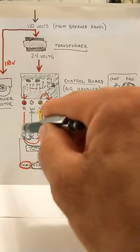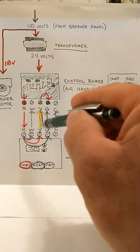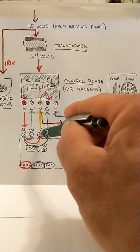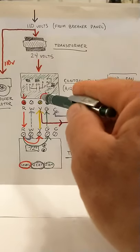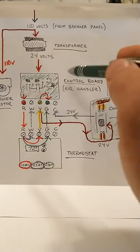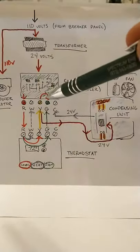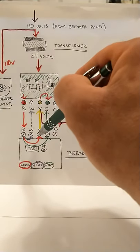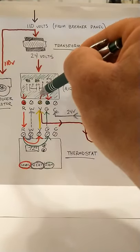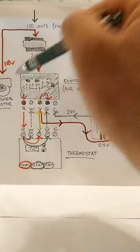When that circuit's closed in cooling mode, your 24 volts will travel from your Y in your thermostat to the Y terminal at your air handler. And what that does is it signals the blower motor to kick in. So your 24 volts will travel through that wire. Once it's registered here, your fan will kick in. The blower motor will kick on.